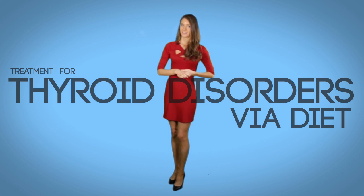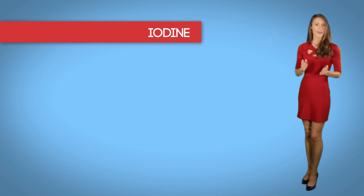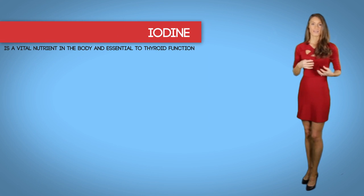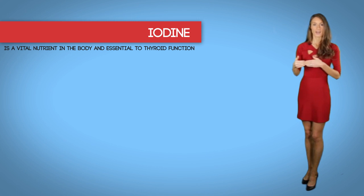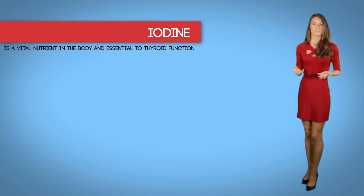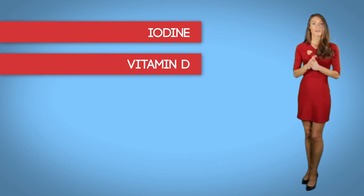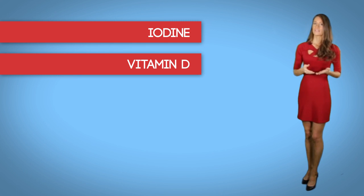Many nutritional factors play a role for the thyroid to function optimally; both nutrient deficiencies and excesses can trigger or exacerbate symptoms. Iodine is a vital nutrient and essential for thyroid function — thyroid hormones are composed of iodine. Iodized salt, along with fish, dairy, and grains, is a major source of iodine. Vitamin D deficiency is linked to Hashimoto's disease, with studies showing that more than 90% of patients are deficient.